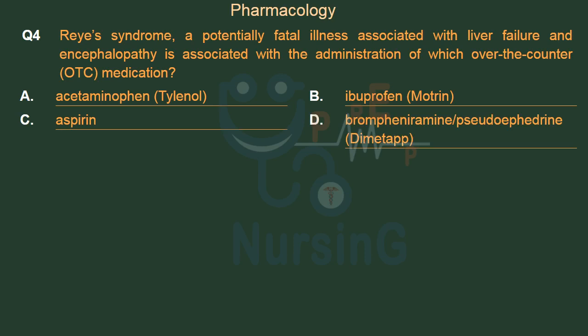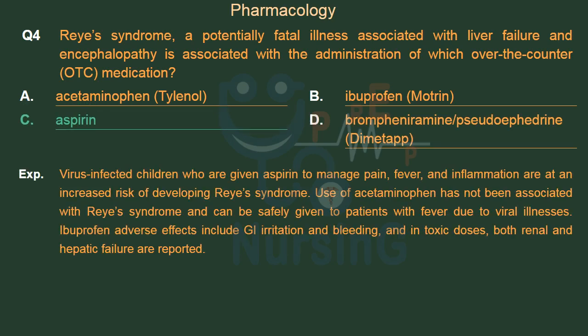The right answer is Option C: Aspirin. Virus-infected children who are given aspirin to manage pain, fever, and inflammation are at an increased risk of developing Reye's syndrome. Use of acetaminophen has not been associated with Reye's syndrome and can be safely given to patients with fever due to viral illnesses. Ibuprofen adverse effects include GI irritation and bleeding, and in toxic doses, both renal and hepatic failure are reported.